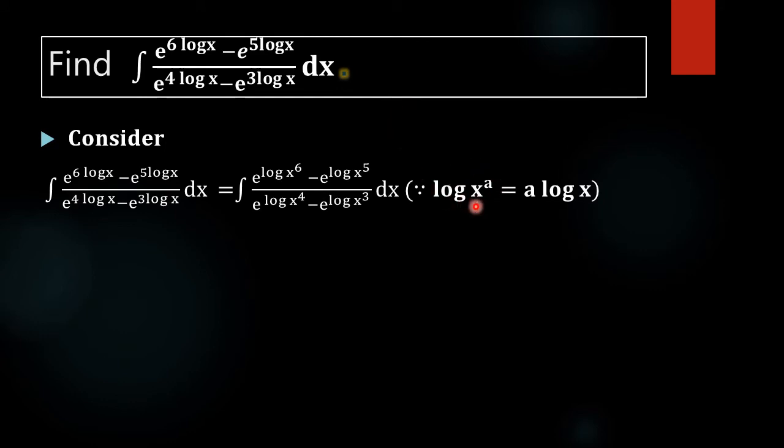So, log x raise to a equal to a log x. We are using this for rewriting e raise to 6 log x as e raise to log x raise to 6 and e raise to 5 log x as e raise to log x raise to 5 and the other two in the same way. Next, we are using another identity connecting the exponential function that is e raise to log x equal to x for again simplifying this terms.